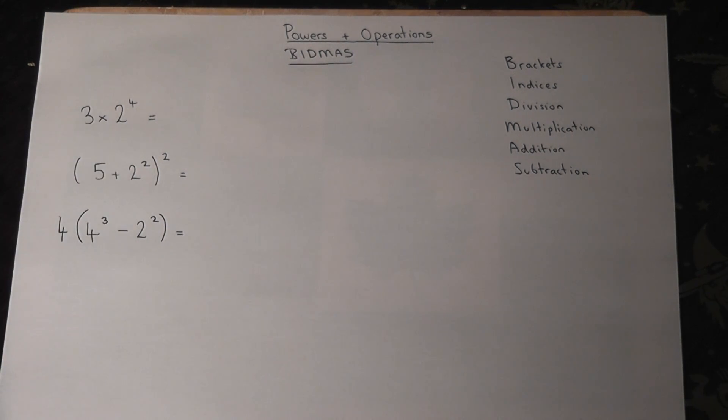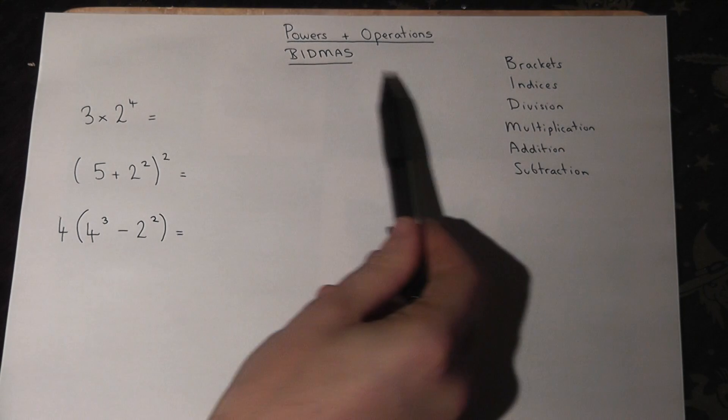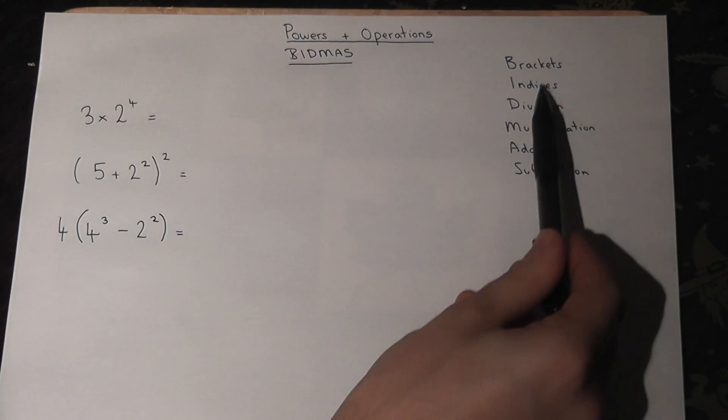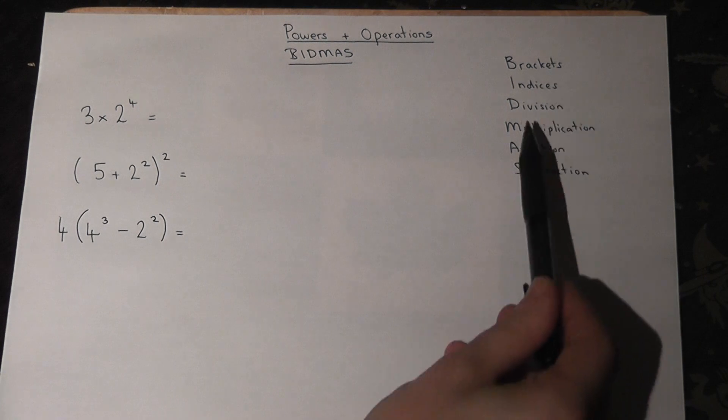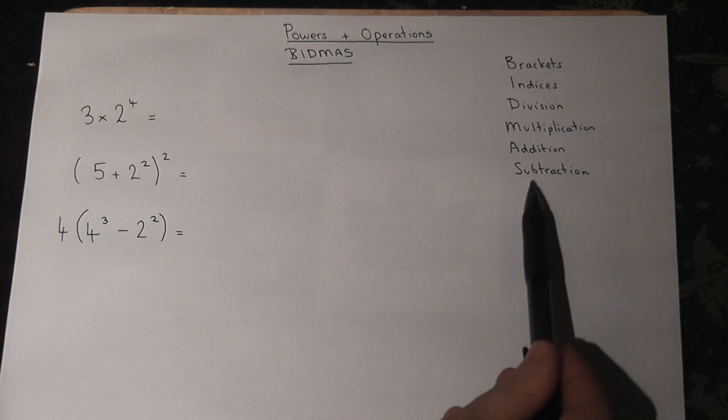We have three quite complex looking calculations there, however they're quite simple if you just follow the rules about which operation to do first. There's a phrase which is BIDMAS which tells you given a question what to do first. B-I-D-M-A-S: we do brackets first, then indices or powers, then we divide, then we multiply, then we add, then we subtract.